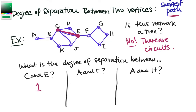Now we want the degree of separation between A and E. We explore the ways to get from one to the other to find the shortest path. We can go A to B to K — that's four edges. Or A to B to C to J to E — also four. But if we take A to B, then C, and then go straight over to E, we cut down to just three. The path A to B to C to E, length three, is the shortest.